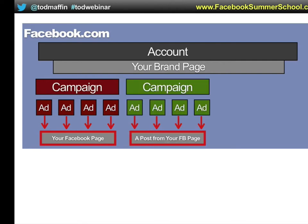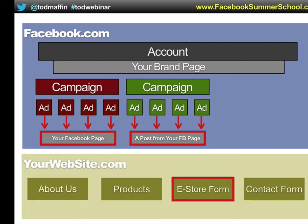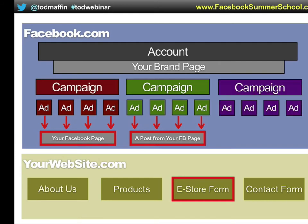You might have another campaign with a completely different goal — say, recruiting staff. That ad would say 'Come work for us,' and the click destination would go to a specific post on your Facebook page rather than your main timeline. Or, if you want clicks to go to your website — say you sell e-books — you'd create another campaign where the ad says 'Come buy your e-books' and the click destination goes to your e-store.